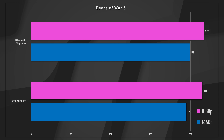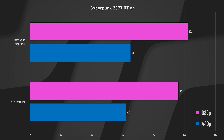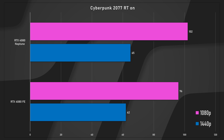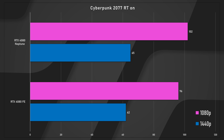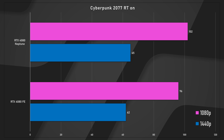Cyberpunk with RT on — 102 versus 96, and 65 to 62. This is the pre-update version, not the new path tracing built into Cyberpunk with the update. Again, completely unnoticeable. But let me tell you what you are going to notice.